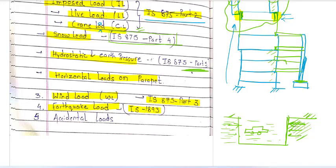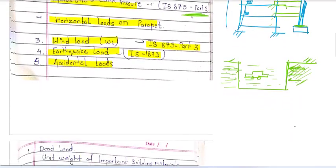फिर आती है earthquake loading, जो IS 1893 में है — यह अलग subject है, अभी basic knowledge काफी है। उसके बाद आते हैं accidental loads। जैसे building construct हो चुकी है, आपने machinery इस floor पर लगानी है — staircase से machine ले जाते वक्त अचानक गिर गई। जो loading आएगी वह accidental load है। Accidental loads कभी भी आ सकते हैं जिनके लिए हमने पहले से तैयारी नहीं की होती।